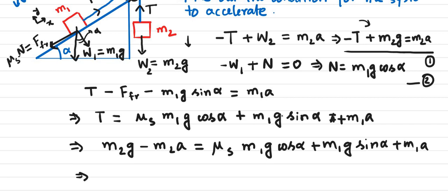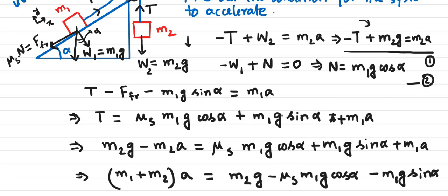We have to rearrange things. On one side, we have M1A plus M2A, so we can factor out A, so we get M1 plus M2 times A. On the other side, we have M2G minus Mu S M1G cosine alpha minus M1G sine alpha. I think that's all of it.